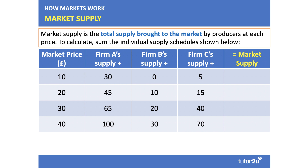Market supply is the total supply brought to the market by producers at each price level. To calculate it, we simply sum the individual supply schedules. At market price £10, Firm A and Firm C are willing to supply — in total 35 units. It's only when the price rises to £20 that Firm B enters the market. Firm A and Firm C will supply more, and in total the three firms can supply 70. As the price goes up, supply expands because producers are willing and able to produce more.